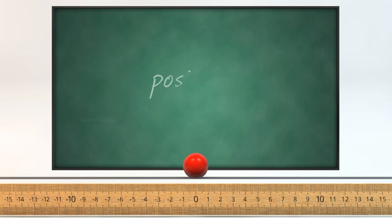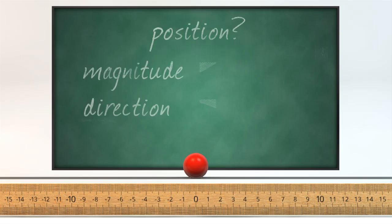Here's a trickier one though. What about position? Well first let's ask ourselves this: Does position have a magnitude? This one's a bit of a freebie. Position is represented by numbers, so of course it has a magnitude. But what about direction?